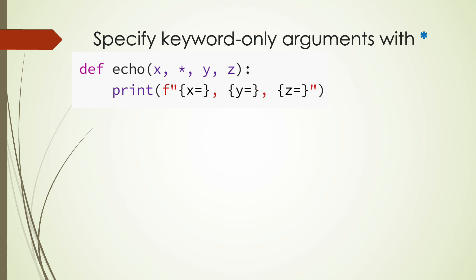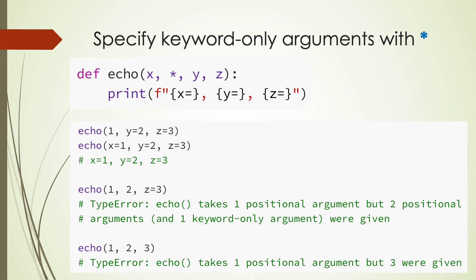On the other hand, in Python, arguments placed after the star symbol in the function definition must be passed as keyword arguments. Let's change the slash to star in the echo function. Now x can be passed by both positional and keyword arguments, but y and z must be passed as keyword arguments.